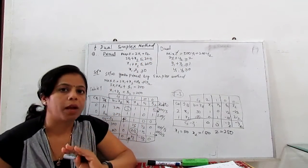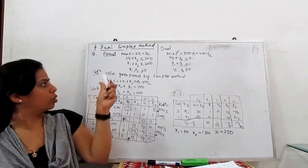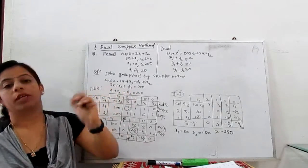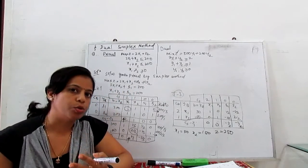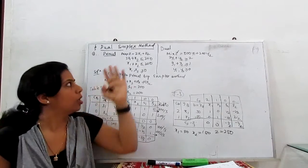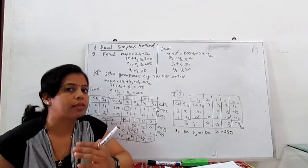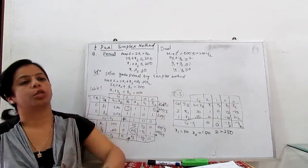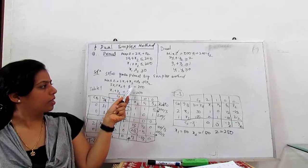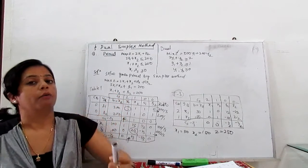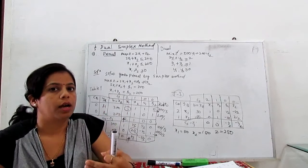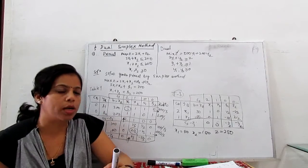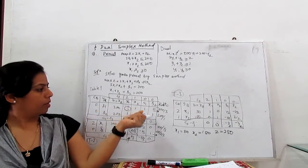Now we solve the primal with the simplex method. To solve by simplex, we convert to standard form by introducing slack variables s1 and s2. So maximize z = 2x1 + x2 + 0s1 + 0s2. For the initial basic feasible solution, we set x1 = x2 = 0, giving s1 = 300 and s2 = 200. We write the first simplex table from this.